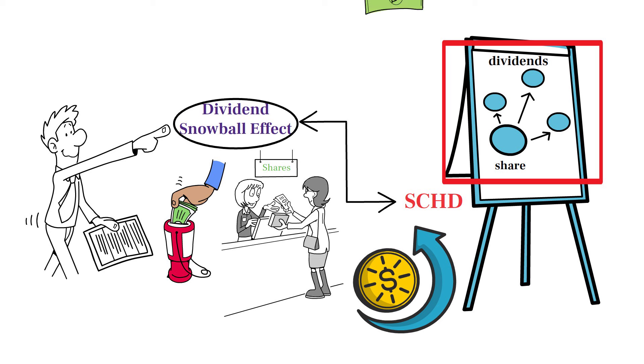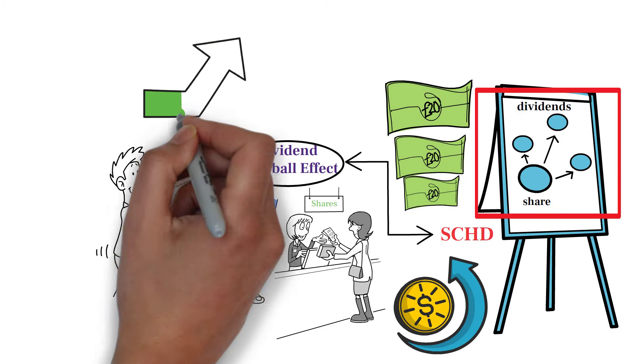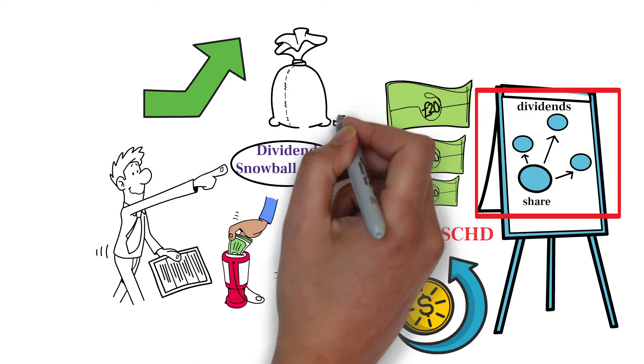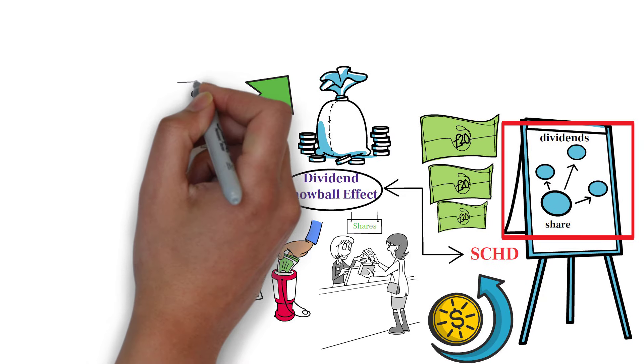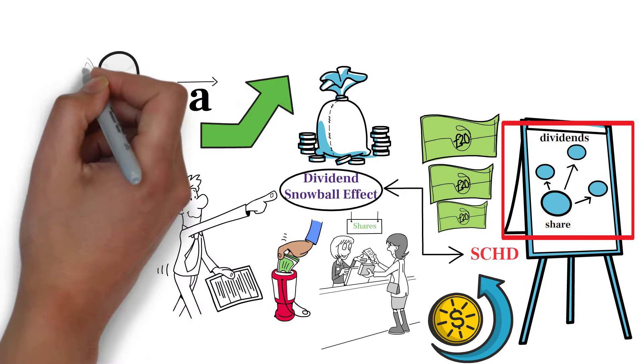By continuously reinvesting dividends, you harness the power of compounding. This compounding effect can significantly boost your income stream and overall wealth in the long term. Essentially, your investments grow at an accelerating pace, much like a snowball rolling downhill, gathering more snow and momentum.